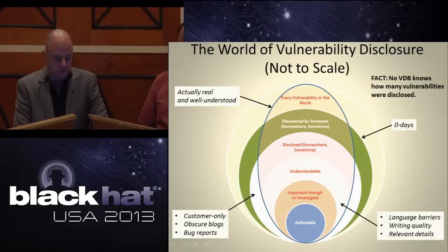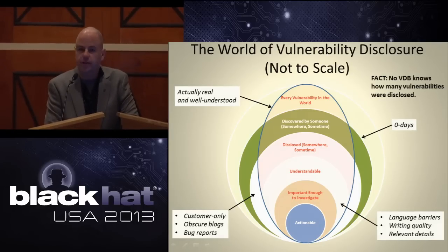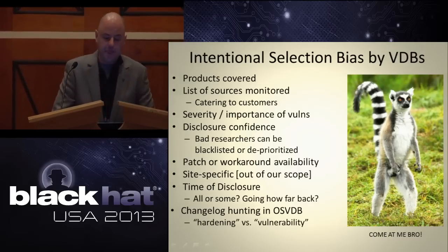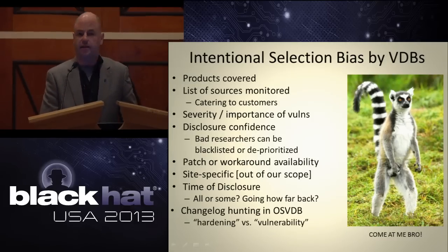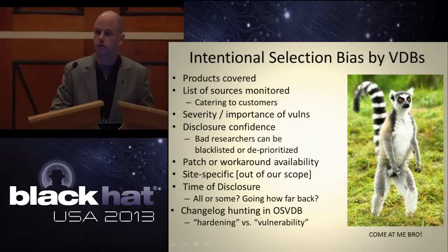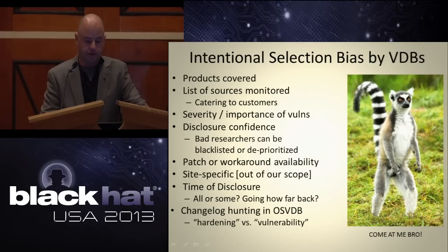The world of vulnerability disclosure is very convoluted. Intentional selection bias by VDBs — what products are covered, what sources do we monitor. Most people just say the VDB exists, it has all the vulnerabilities, right? No. No VDB is complete. No VDB is remotely close to complete. We are all horrible at cataloging public vulnerabilities — every single one of us. And if you take that to heart and think about all the stats generated off of our hard work that I am calling complete crap, it puts it in perspective. That's just basically a time and resource limitation.